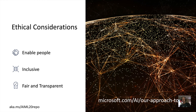I've saved the most important slide for last. You've seen how easy it is to integrate powerful AI capabilities into your applications. But with great power comes great responsibility. It's critically important to understand the impact of your application on people and consider the ethical implications. You should work with an ethical framework that focuses on enabling people to achieve more rather than replacing humans with AI, keeps things inclusive of all types of users, and is done in a fair and transparent way that doesn't marginalize underrepresented groups.